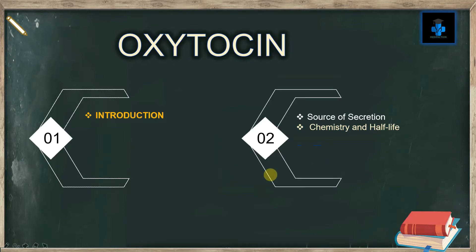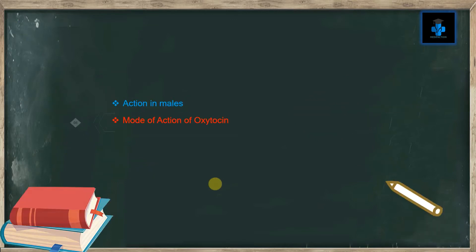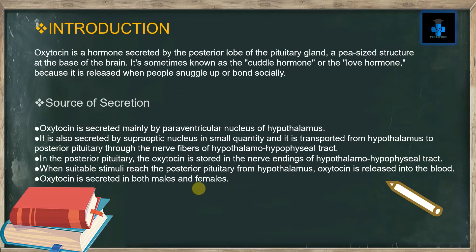In this video I will be enumerating: an introduction about oxytocin, the source of secretion of oxytocin, chemistry and its half-life, actions in females, actions on the mammary gland, the milk ejection reflex, action on the uterus, action in males, and also the mode of action of oxytocin. Let's begin. Oxytocin is a hormone secreted by the posterior lobe of the pituitary gland, which is a pea-sized structure at the base of the brain.